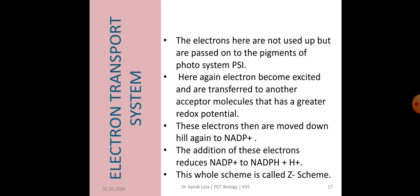Here, the electrons are not used as they pass through the electron transport chain, but are passed to the pigments of photosystem 1. Simultaneously, electrons in the reaction center of photosystem 1 are also excited when they receive red light of wavelength 700 nanometer.